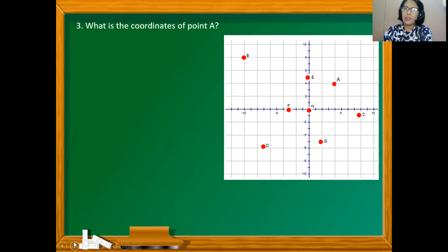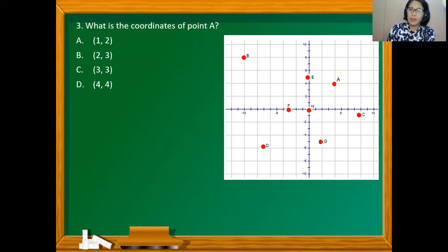What are the coordinates of point A? Is it (1,2), (2,3), (3,3), or (4,4)? Its x-coordinate is 4 while its y-coordinate is 4, so it has to be (4,4).